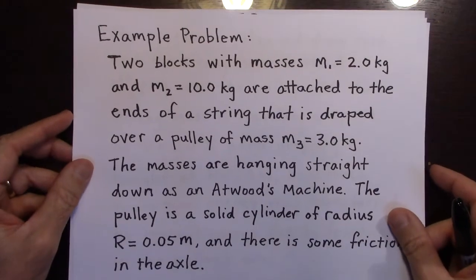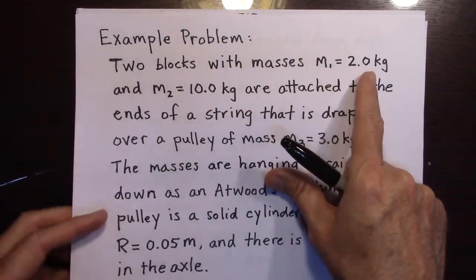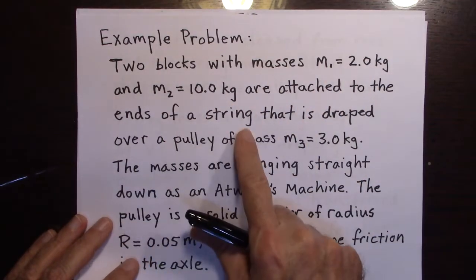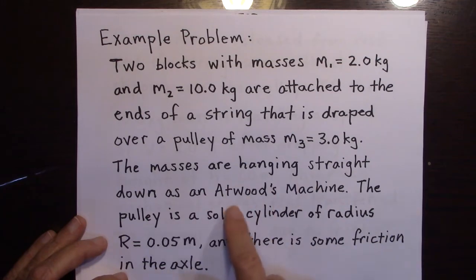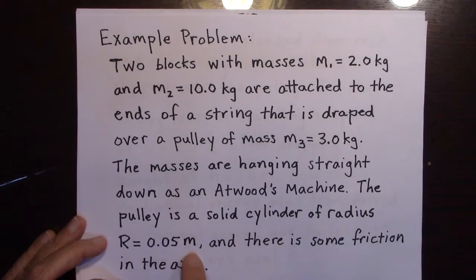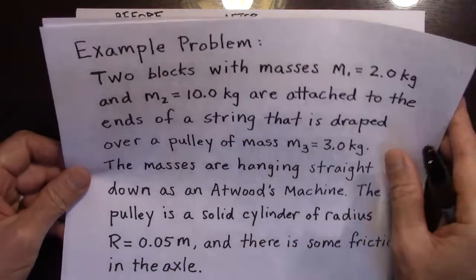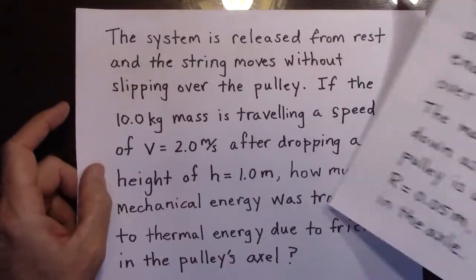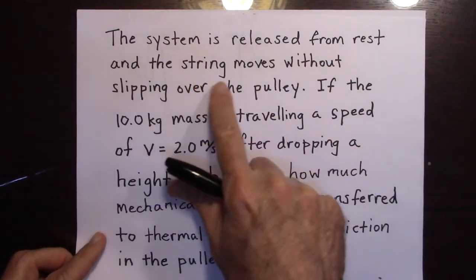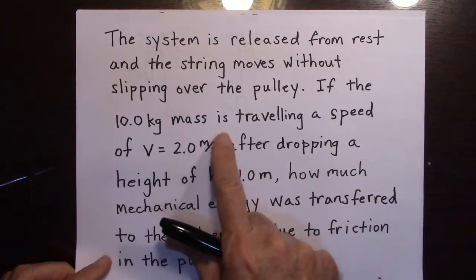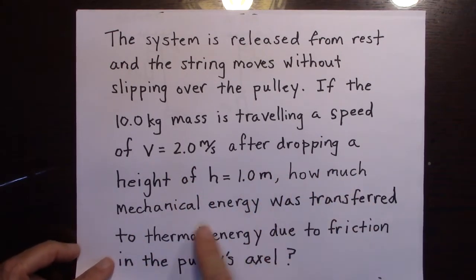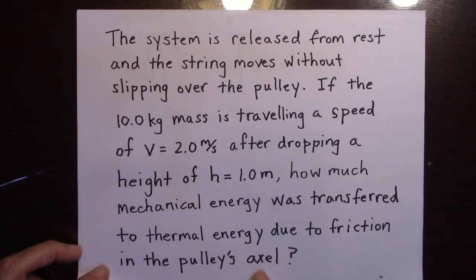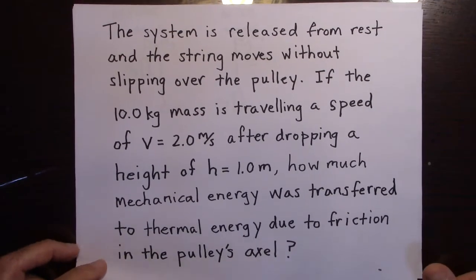Here's the example problem: two blocks with masses m1 = 2 kg and m2 = 10 kg are attached to the ends of a string draped over a pulley of mass m3 = 3 kg. The pulley is a solid cylinder of radius r = 0.05 meters with friction in the axle. The system is released from rest; the string moves without slipping over the pulley. If the 10 kg mass travels at v = 2 m/s after dropping a height of 1 meter, how much mechanical energy was transferred to thermal energy due to friction in the pulley's axle?